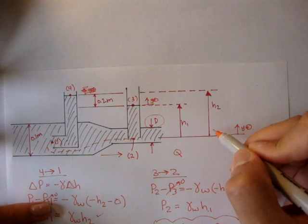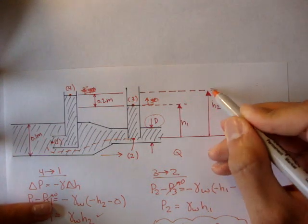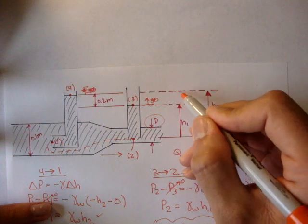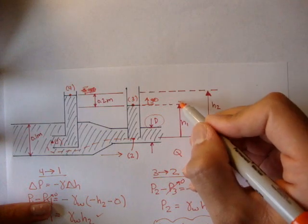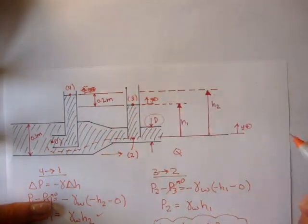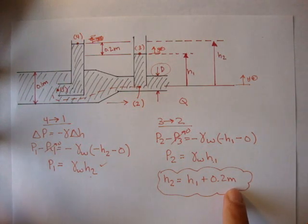Yeah, we can because h2 is going to be equal to h1 plus this distance here. And that distance there is 0.2 meters. So h2 is equal to h1 plus 0.2 meters.